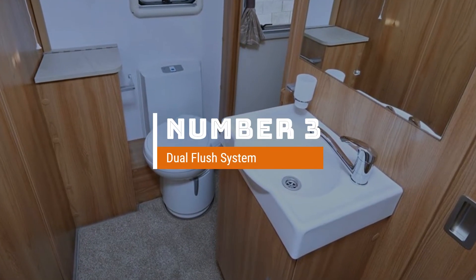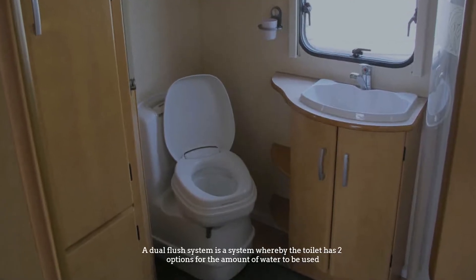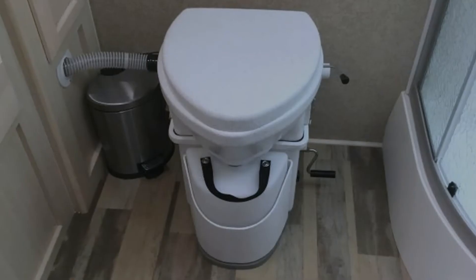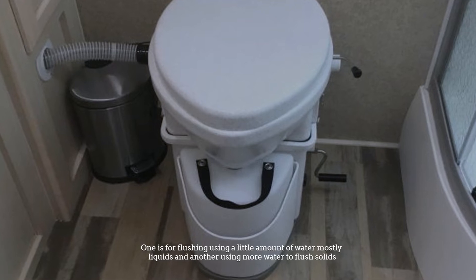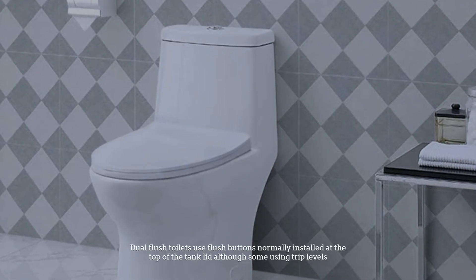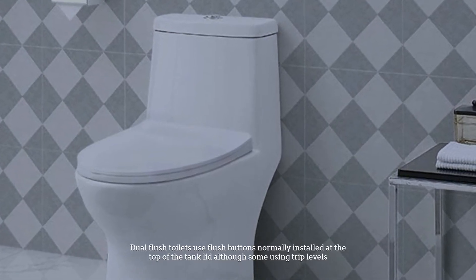Number 3: Dual Flush System. A dual flush system is a system whereby the toilet has two options for the amount of water to be used. One is for flushing using a little amount of water, mostly for liquids, and another using more water to flush solids. Dual flush toilets use flush buttons normally installed at the top of the tank lid, although some use trip levers.